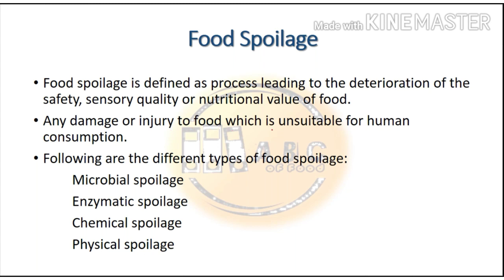Any damage or injury to food which makes it unsuitable for human consumption is known as food spoilage. The different types of food spoilage are: first, microbial spoilage; second, enzymatic spoilage; third, chemical spoilage; and fourth, physical spoilage. Microbial spoilage is due to the activity or presence of microorganisms, enzymatic spoilage is due to enzymatic catalytic reactions, and chemical spoilage is due to chemical reactions between food components and the surroundings.